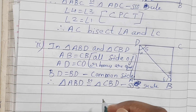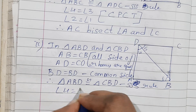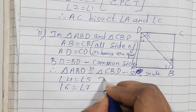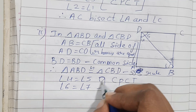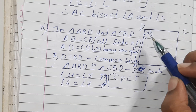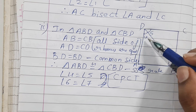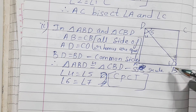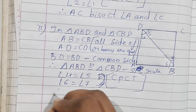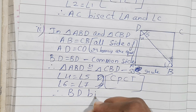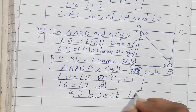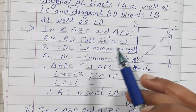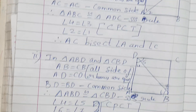You can see that angle 4 is equal to angle 5, and angle 6 is equal to angle 7 — by CPCT. If angle 4 equals angle 5, that means BD is bisecting at D. If angle 6 equals angle 7, BD is bisecting at B. Therefore, BD bisects angle B and angle D. We have proved the second part as well.